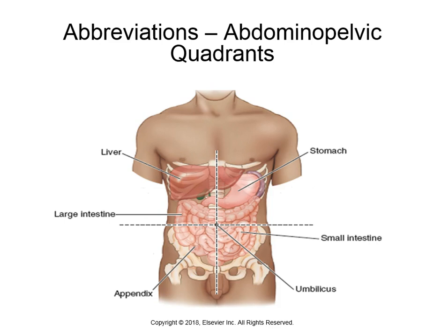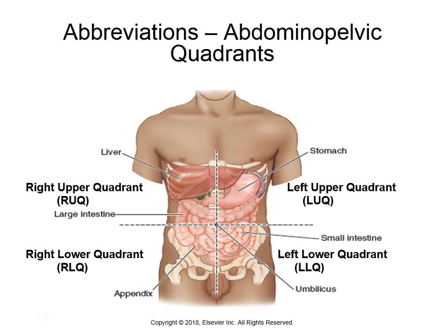You can also separate the abdomen by quadrant, which is sometimes a bit easier. Using the belly button as the center point, you draw a vertical and horizontal line to create four equal sections. Right and left reference the patient's perspective. You identify whether you're talking about upper or lower — direction first, then upper or lower, then quadrant. For example, pain in the liver would be in the right upper quadrant (RUQ), and a stomach problem would likely be in the left upper quadrant (LUQ).